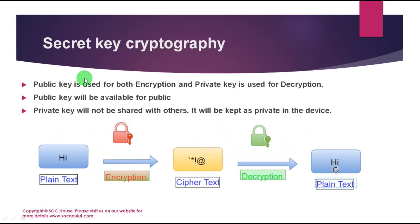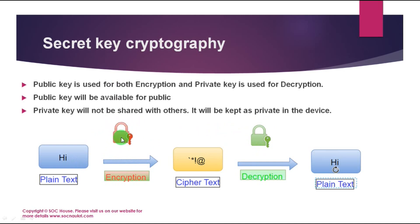Public key cryptography is also known as asymmetric key encryption. In this encryption, one key is used for encryption and a separate or different key is used for decryption. The key used for encryption is known as the public key, which is publicly available to all. Anyone can encrypt data with the public key, but for decryption the private key is used, and the private key is not shared with others — it is kept private on the device.